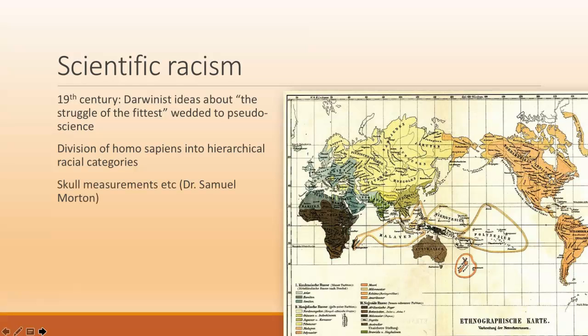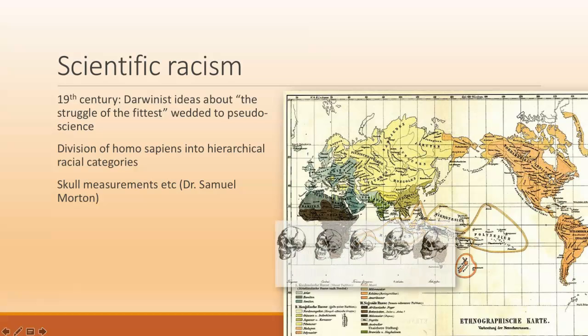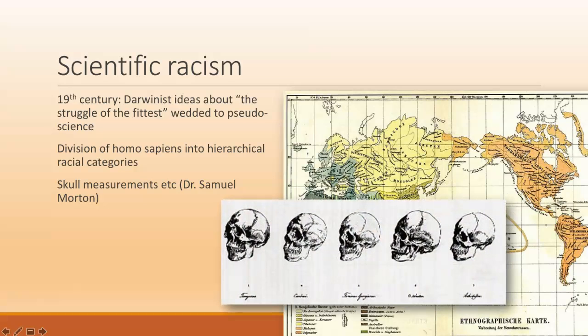And in fact, what we see at the beginning of this chapter of our textbook is the terrible story of Dr. Samuel Morton and how he began to conduct experiments measuring the size of skulls of different peoples from different populations to supposedly prove his ideas about variations in intelligence.